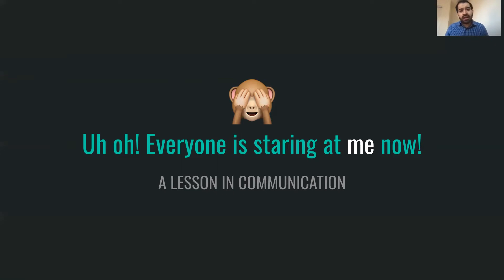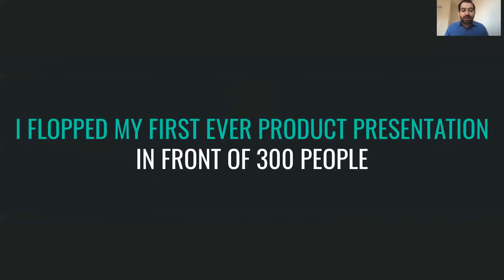In product roles, a lot of showcasing what you've built and sharing your ideas happens with large audiences. The same thing happened to me in my first role. I started off with a project and was asked to work on it for the first six months. The first six months were really good — I got some good results and good metrics to share. Then my boss asked me to present in front of the entire company — about 300 people at an all-hands meeting. I flopped my first ever product presentation, in front of 300 people. As I was standing there on the podium, my hands were shaking, my heart was beating too fast, and I was super nervous.